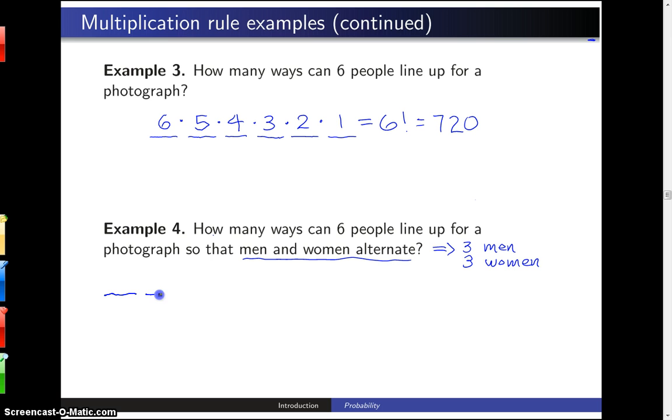Again, you as the photographer have six decisions on your hand, and the first decision is who to place at the far left. You can choose any of the six people, any of the three men and three women, to put on the far left, so there are six different ways that decision can be made.